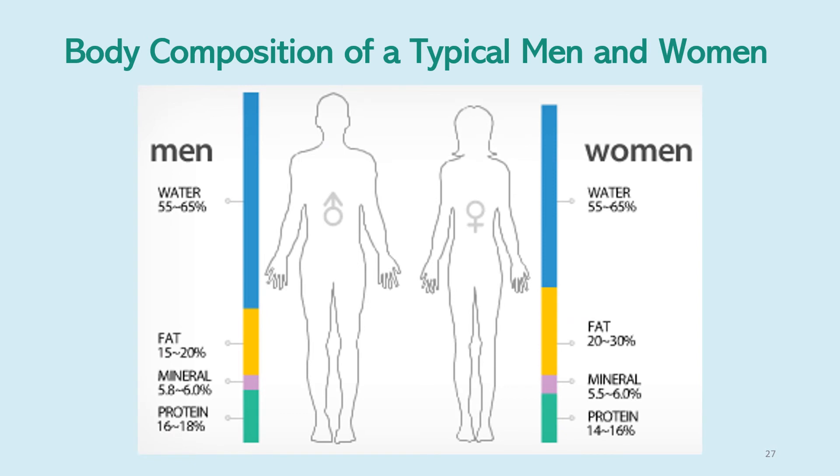There is a distinct difference between body composition of a typical man and woman. Men have only 15 to 20% fat compared to women who have 20 to 30% fat. Men also have higher protein composition compared to women.